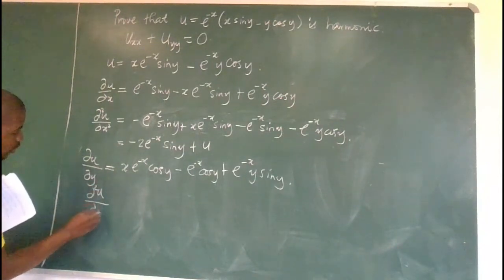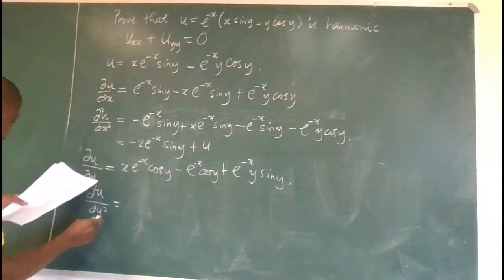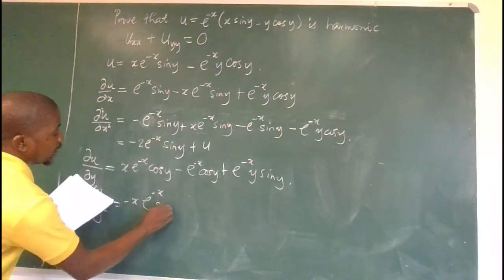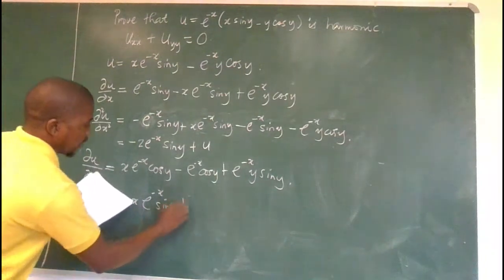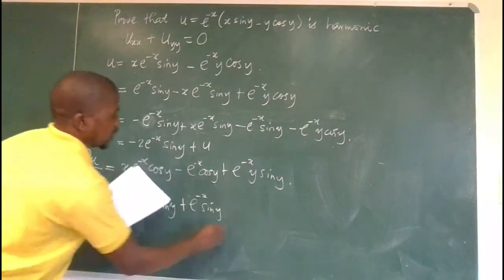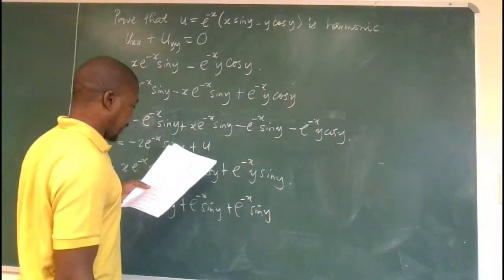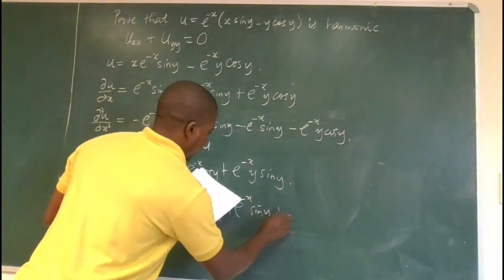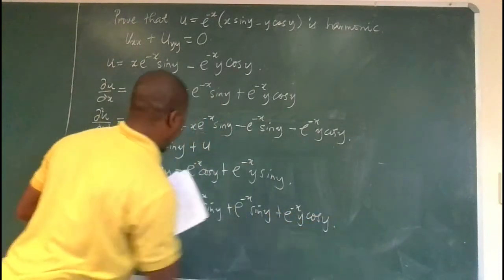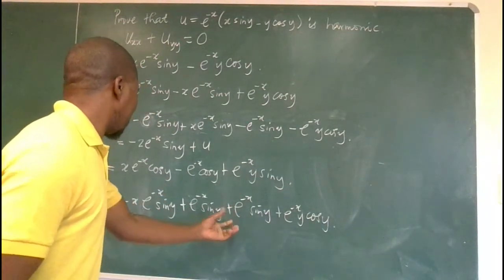Differentiating again with respect to y to get the second derivative, we end up with minus x e to the power of minus x sin y, plus e to the power of minus x sin y, plus e to the power of minus x times y cos y plus 1. These two terms have a common factor.